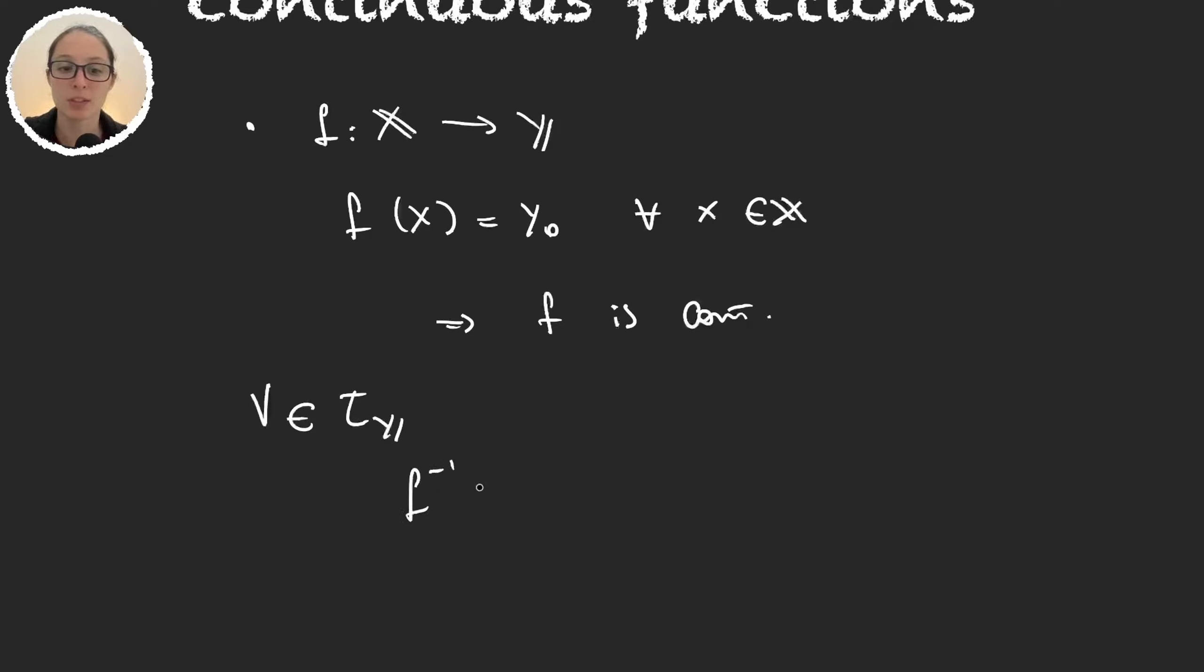If b has y0, then the preimage of b will be every element in x, because for every x in x, f of x is y0, so it's an element in b. So this one will give us all x.